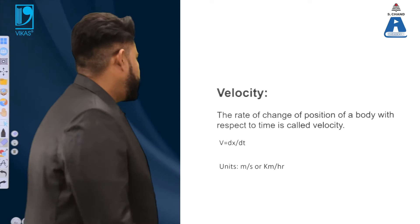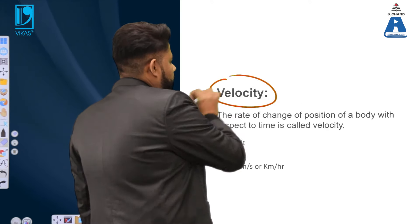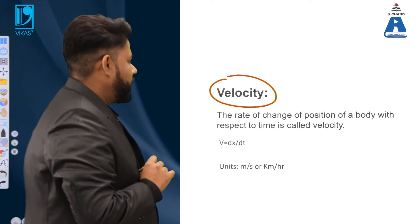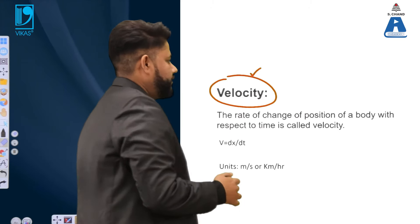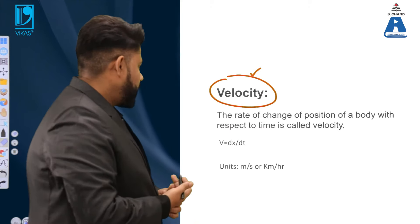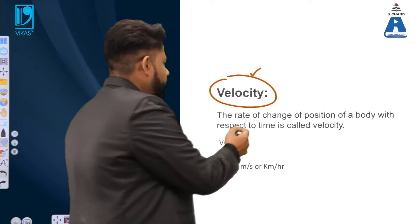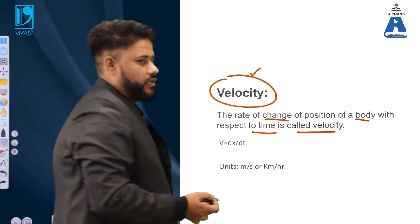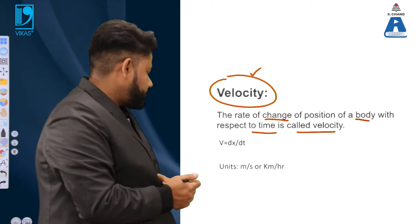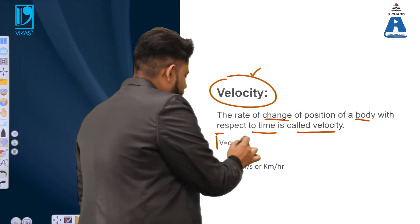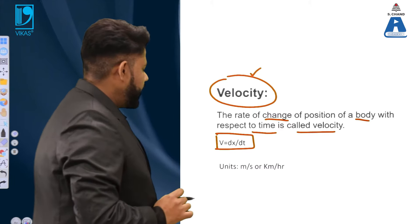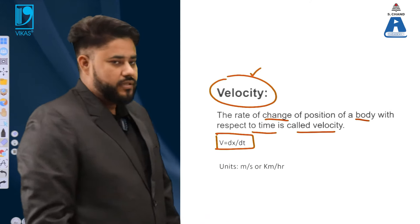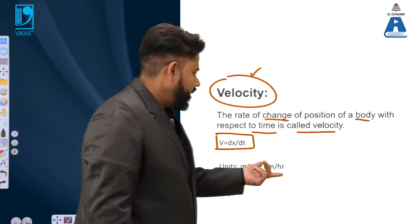Now for another basic term: velocity. Velocity is basically the rate of change of position of the body with respect to time. In derivative terms, velocity equals dx over dt. Its units are meters per second or kilometers per hour, depending on what values of distance and time are given.